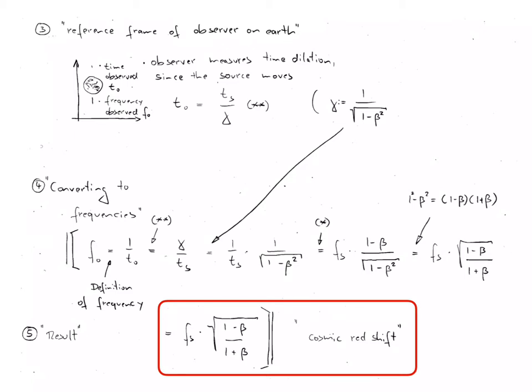Using some algebra, the familiar equation of f0 equals fs times the square root of 1 minus beta divided by 1 plus beta is obtained. This result gives the relativistically correct description of the astrophysical cosmic redshift.